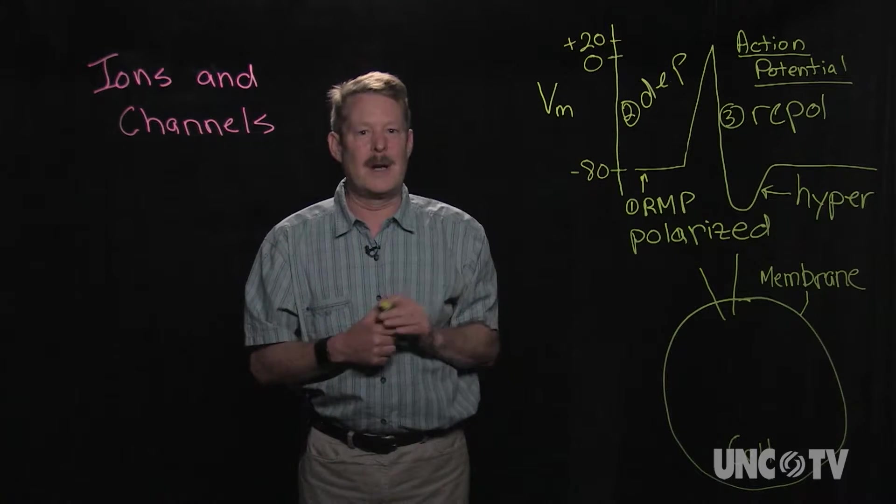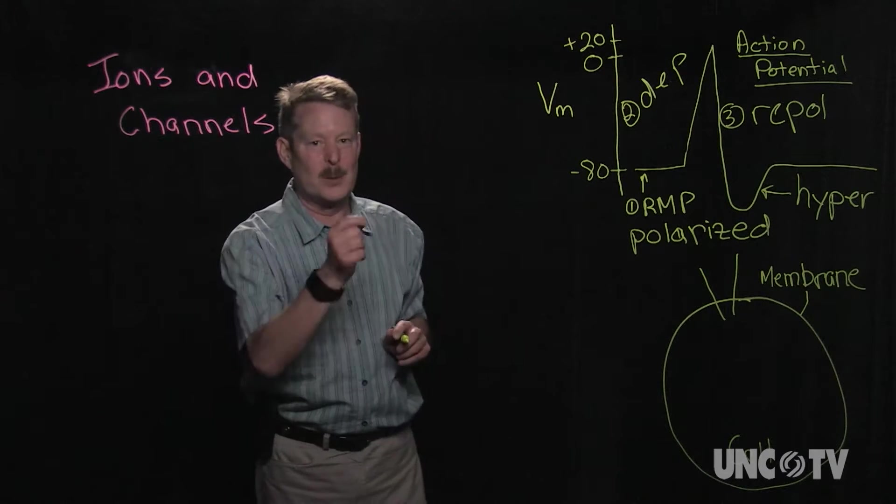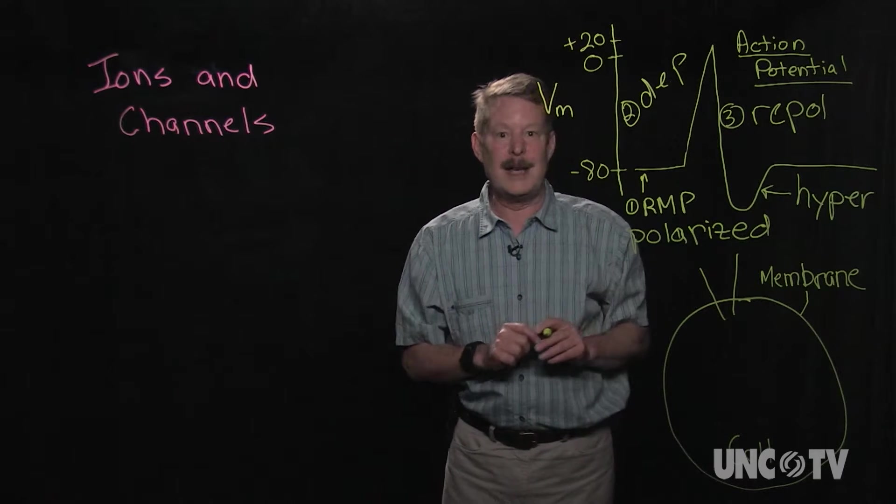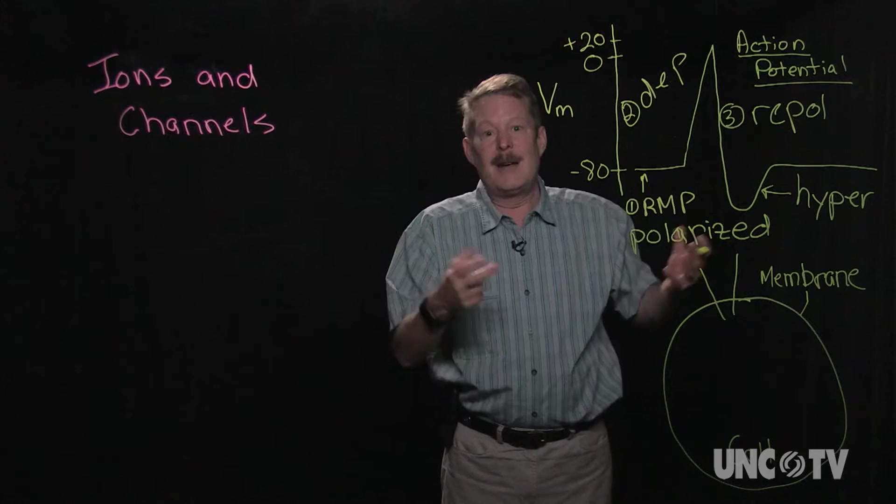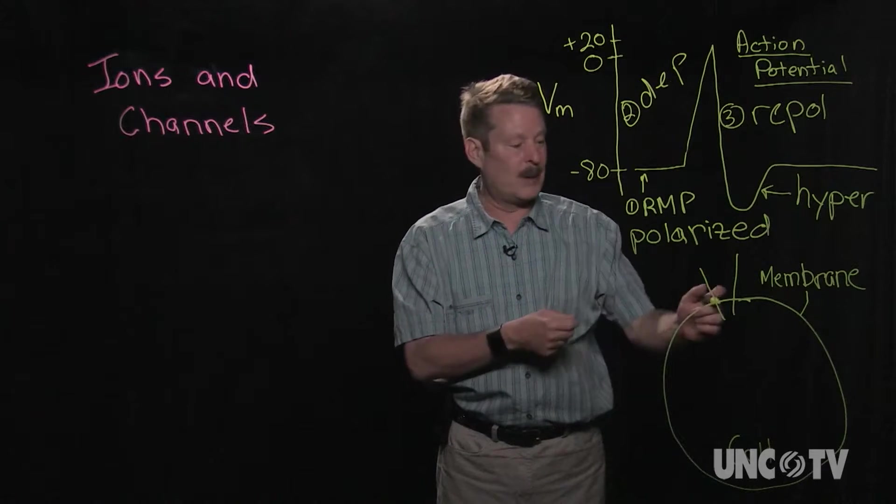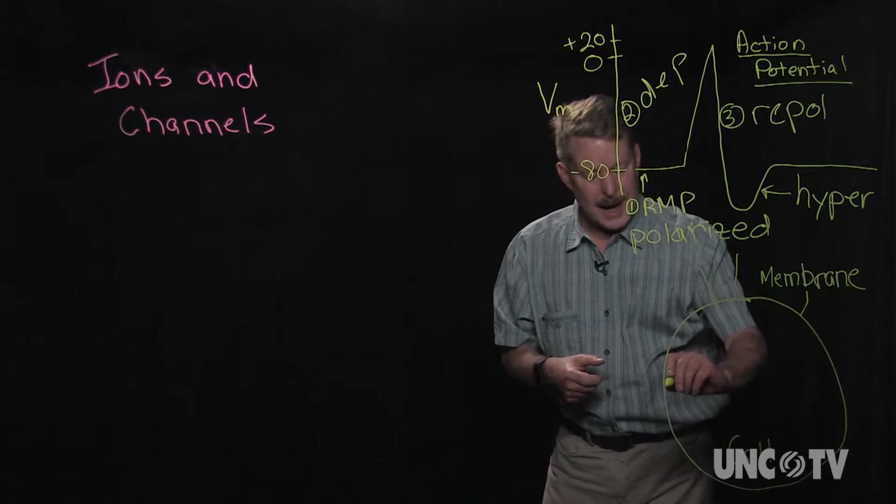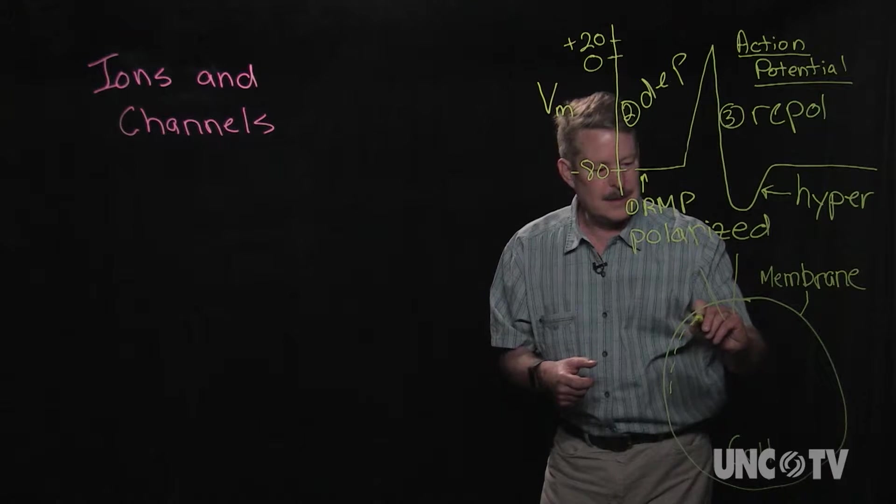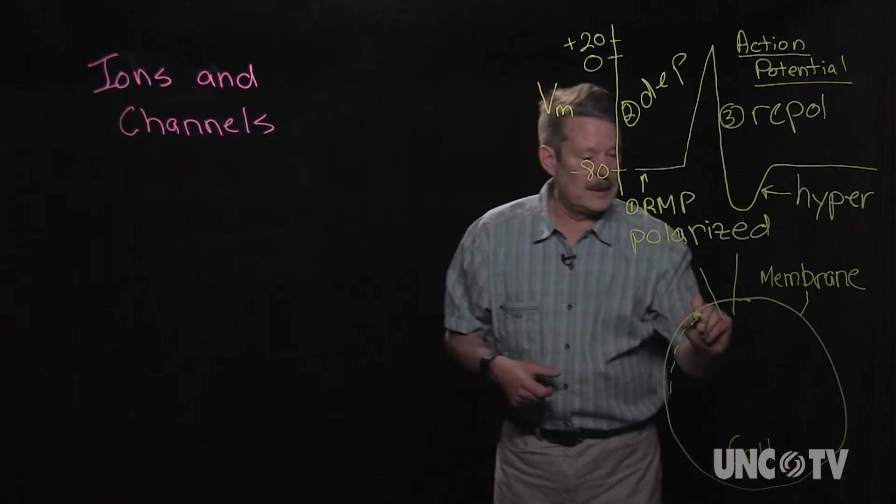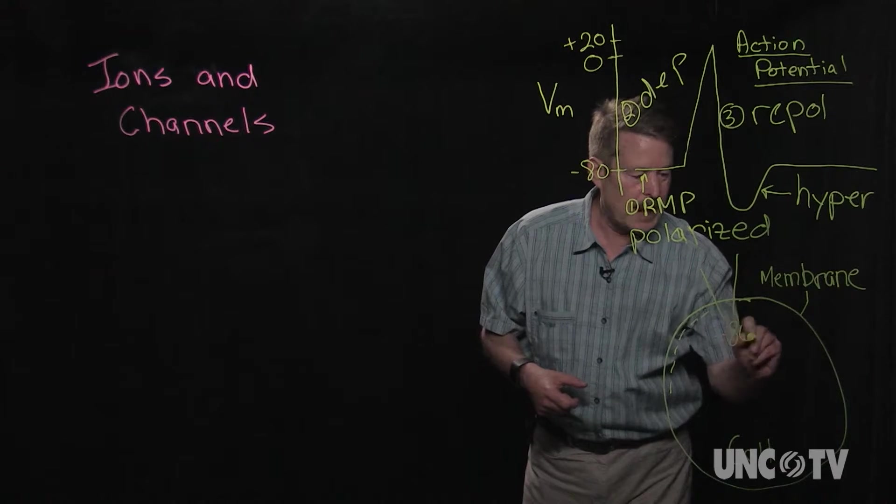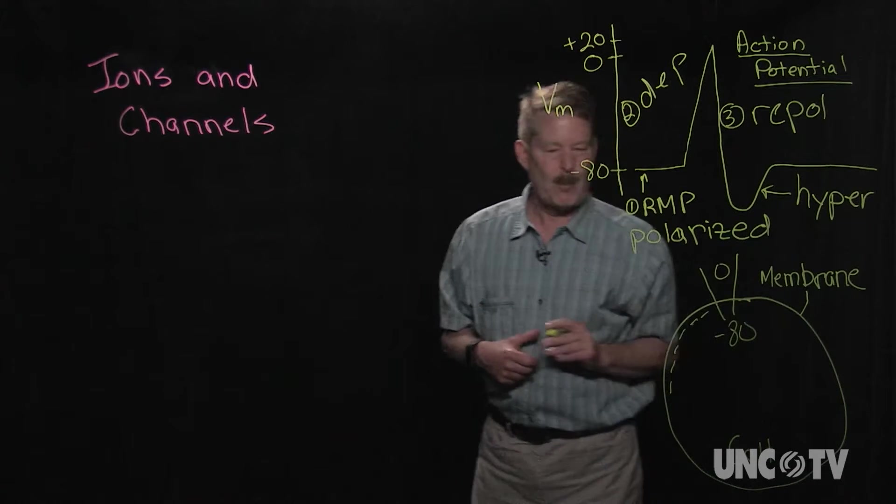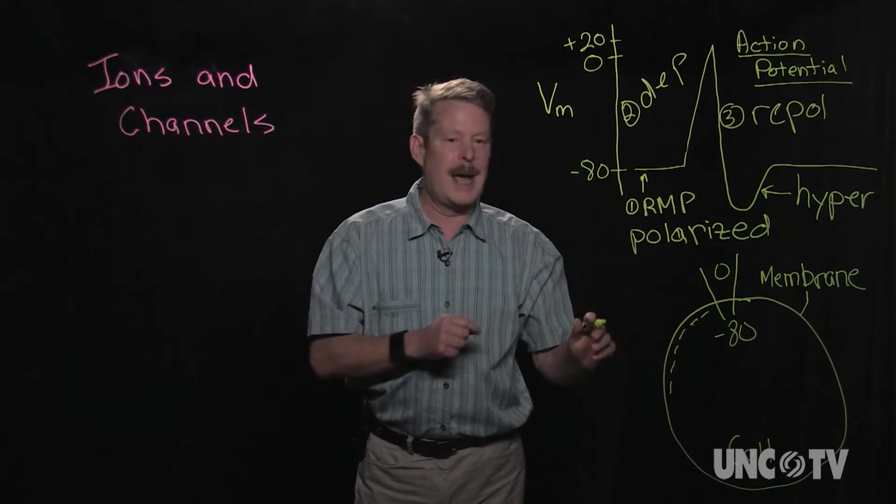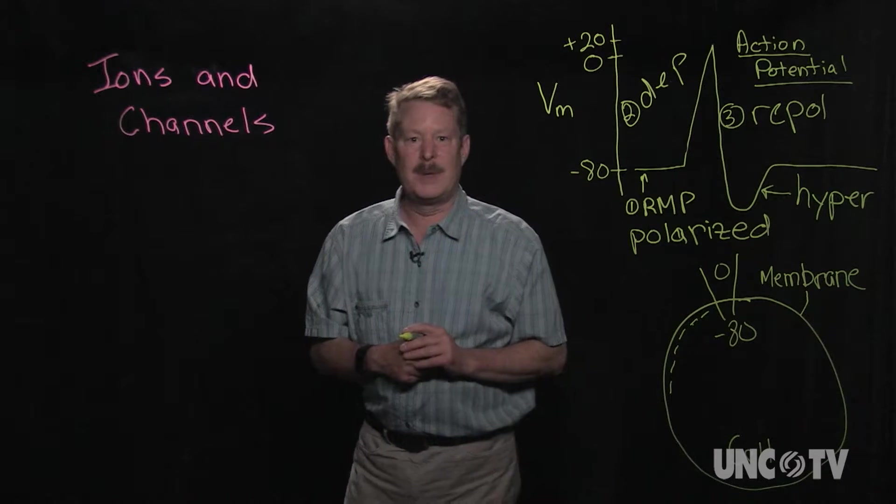So we're talking about this resting membrane potential. What do we mean by the resting membrane potential? If it's minus 80, do we mean the inside of the cell is minus 80? The outside of the cell is minus 80? We said we can measure it with this electrode. As it turns out, the inside of the cell is negative relative to the outside.